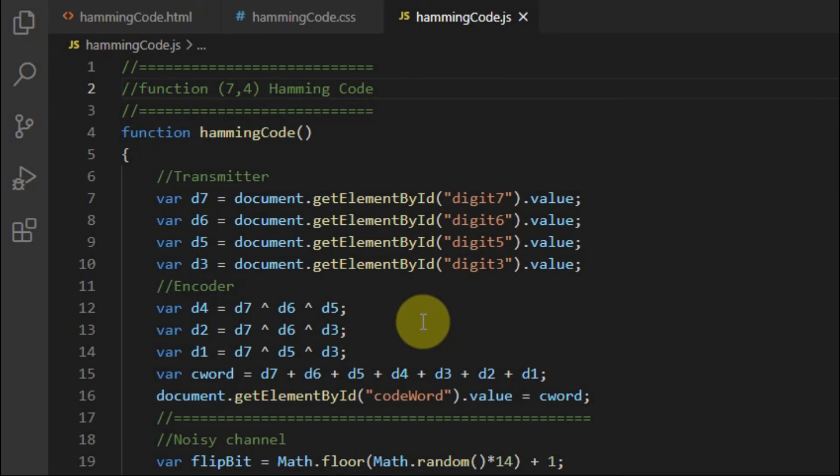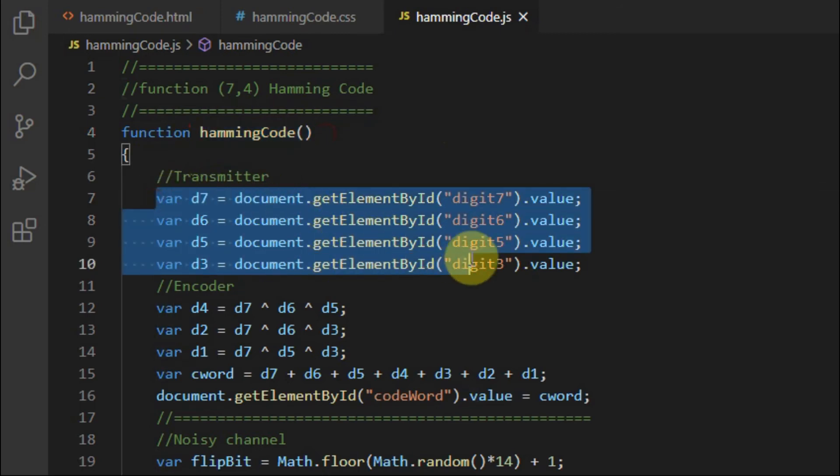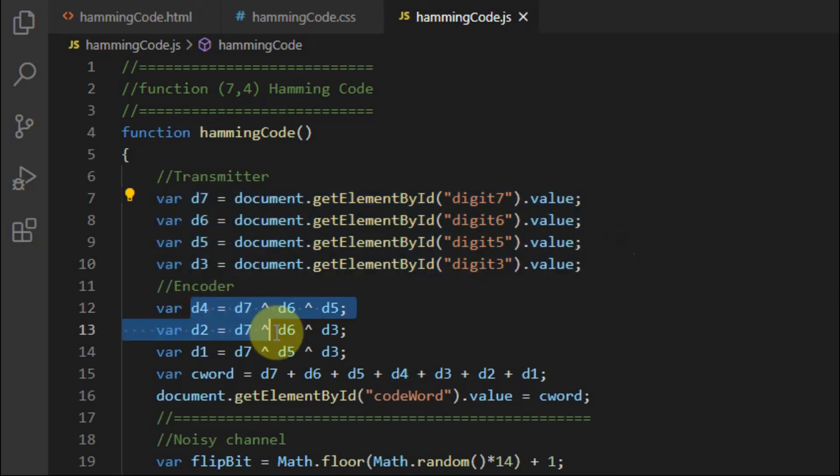Let's have a look at the web page code used in the project. Here I will only focus on the JavaScript part of the program. When we click on the encoder button, this function will be called hamEncode. Inside the function, we will get the 4-bit message stored into their appropriate variables. Then we feed the message into the encoder logic to generate the codeword.